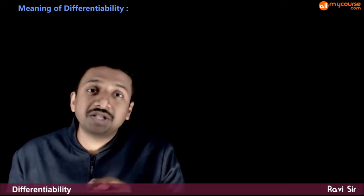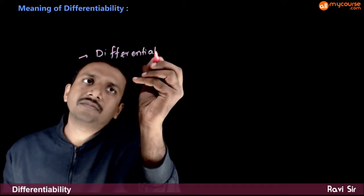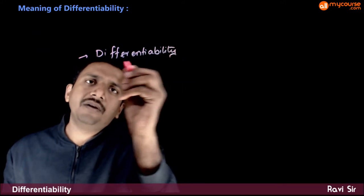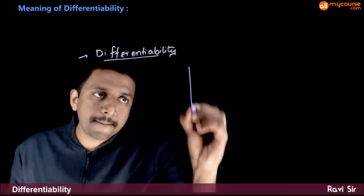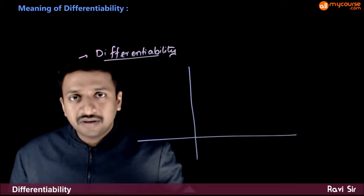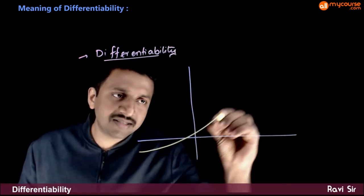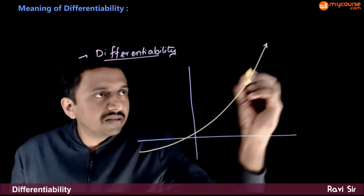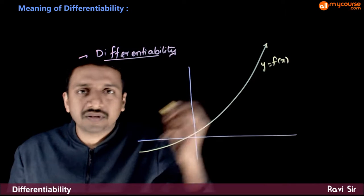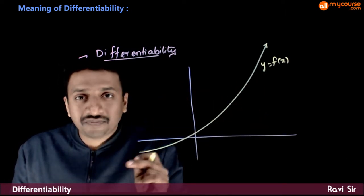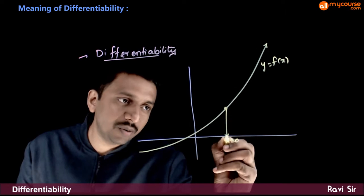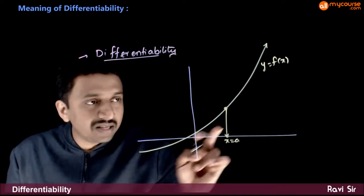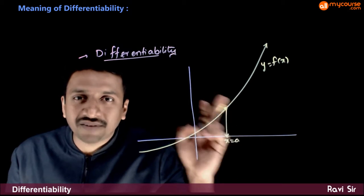Now, what is the meaning of differentiability? Suppose you have a function y is equal to f of x. Let us say that it looks something like this. We say that this function is differentiable at a point corresponding to x is equal to a, if this function has a differential at this point.